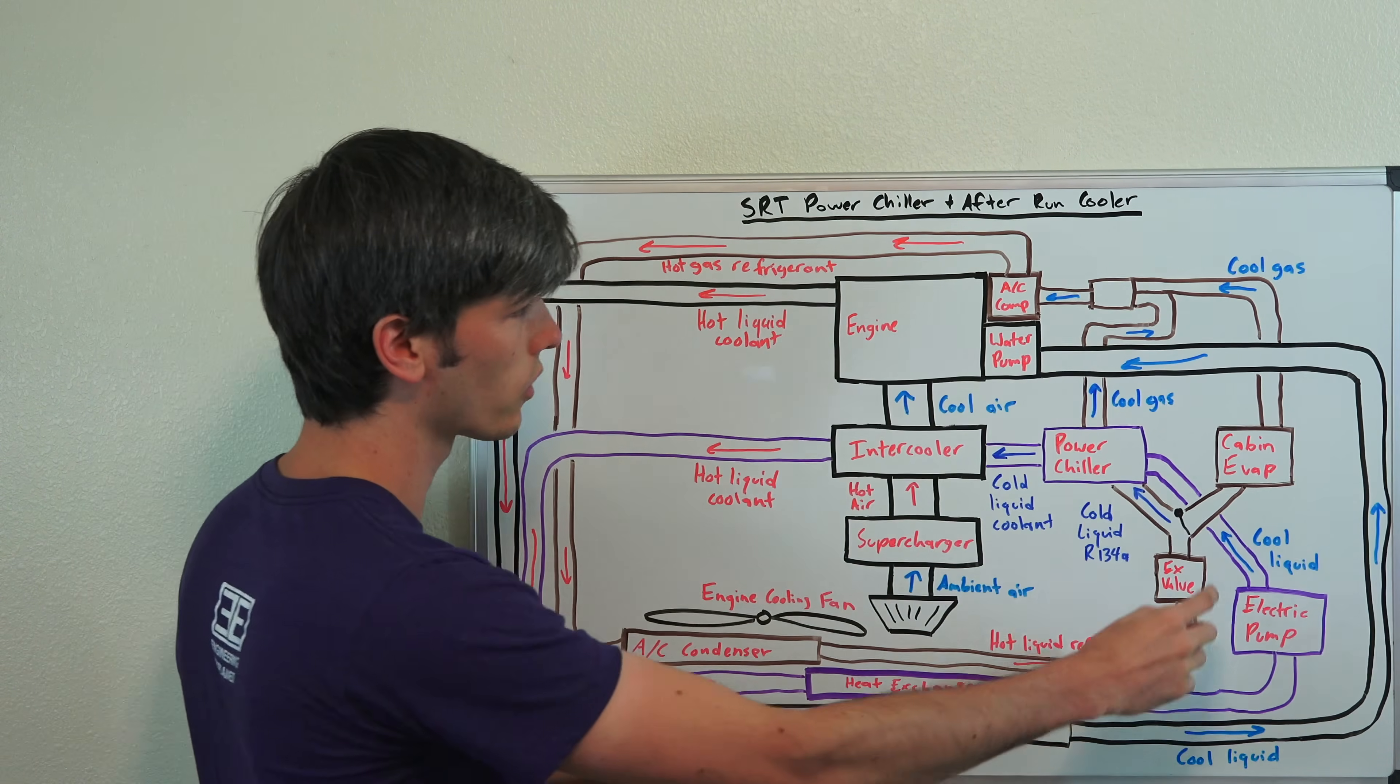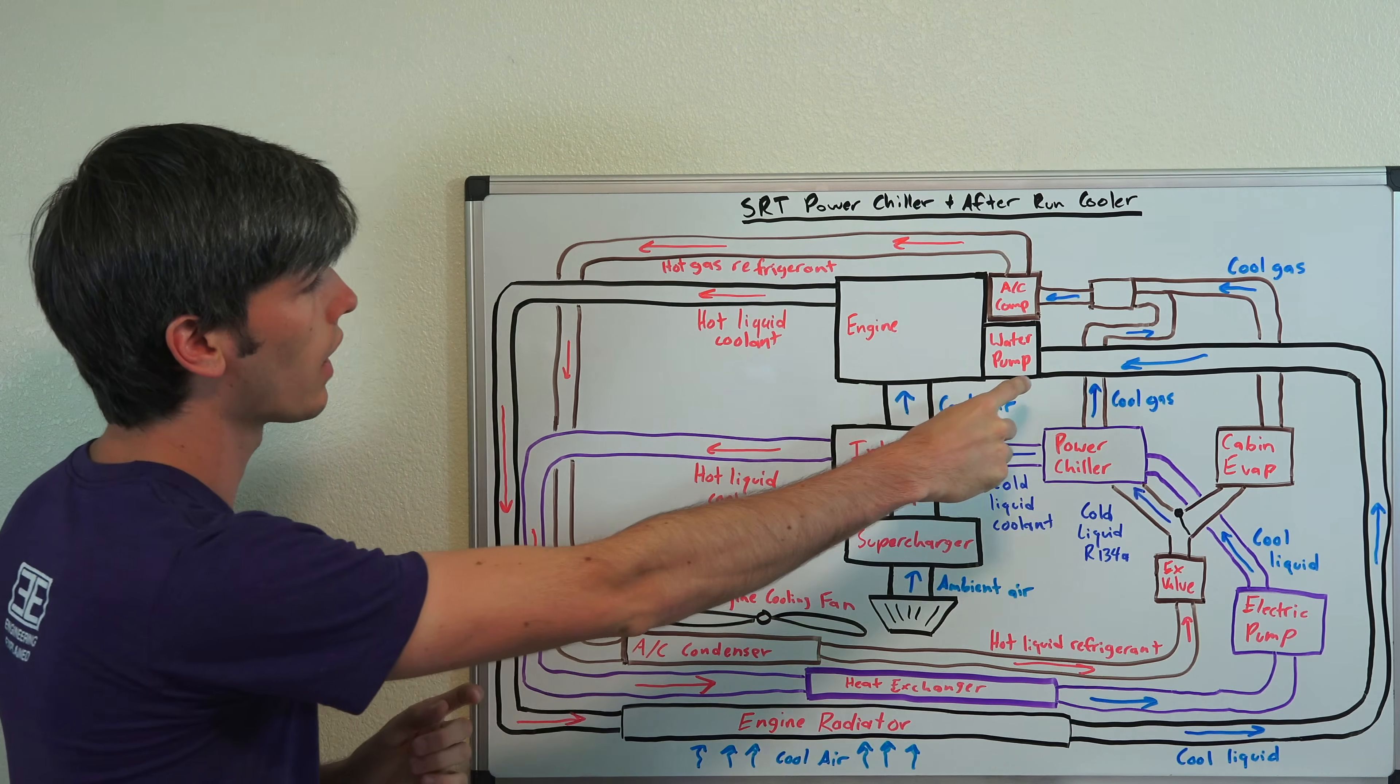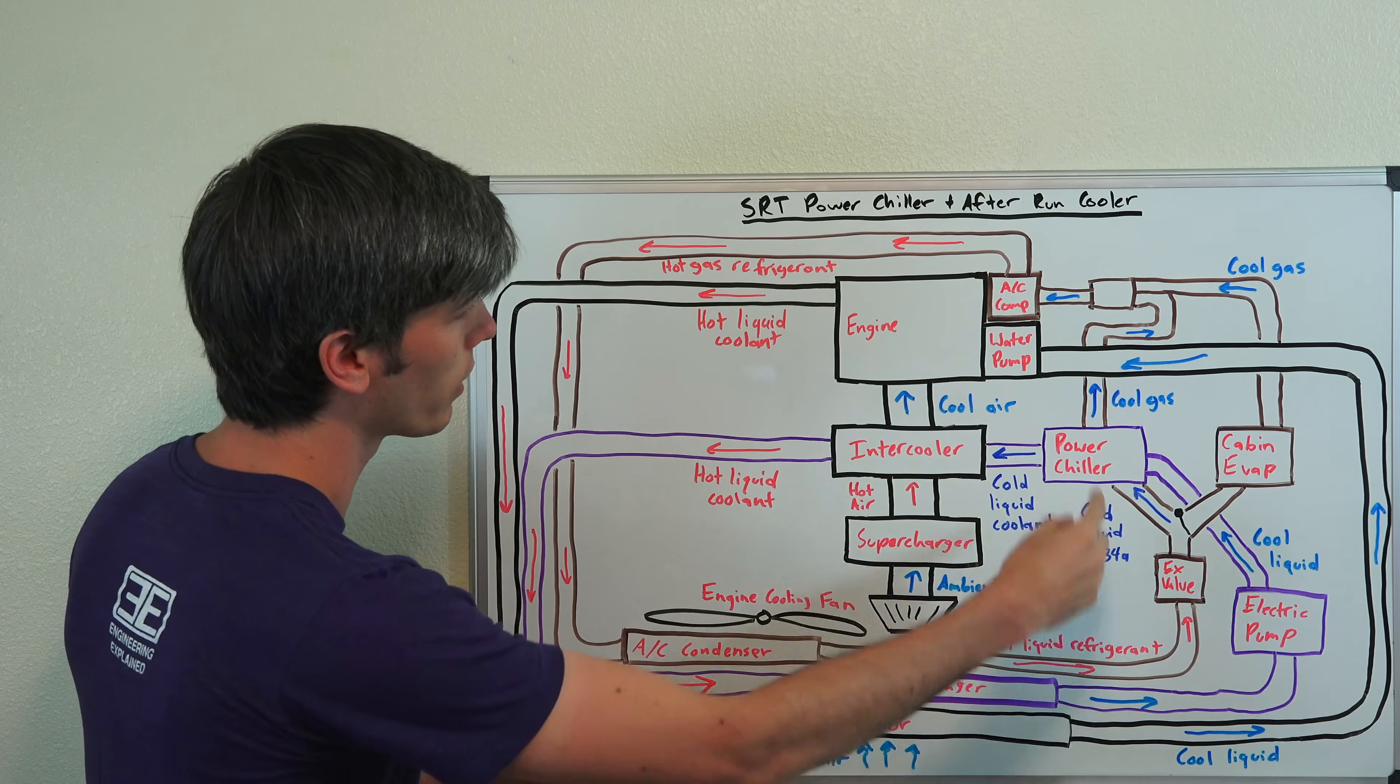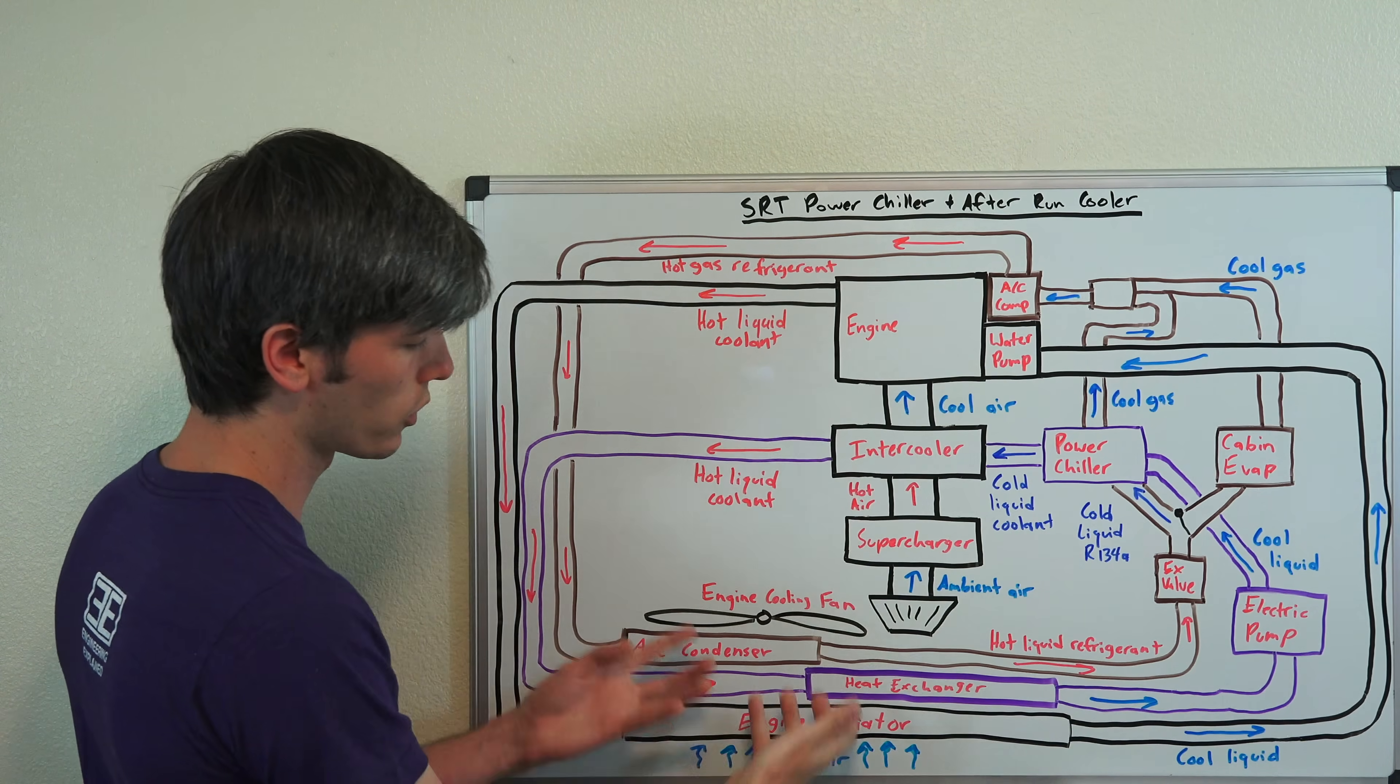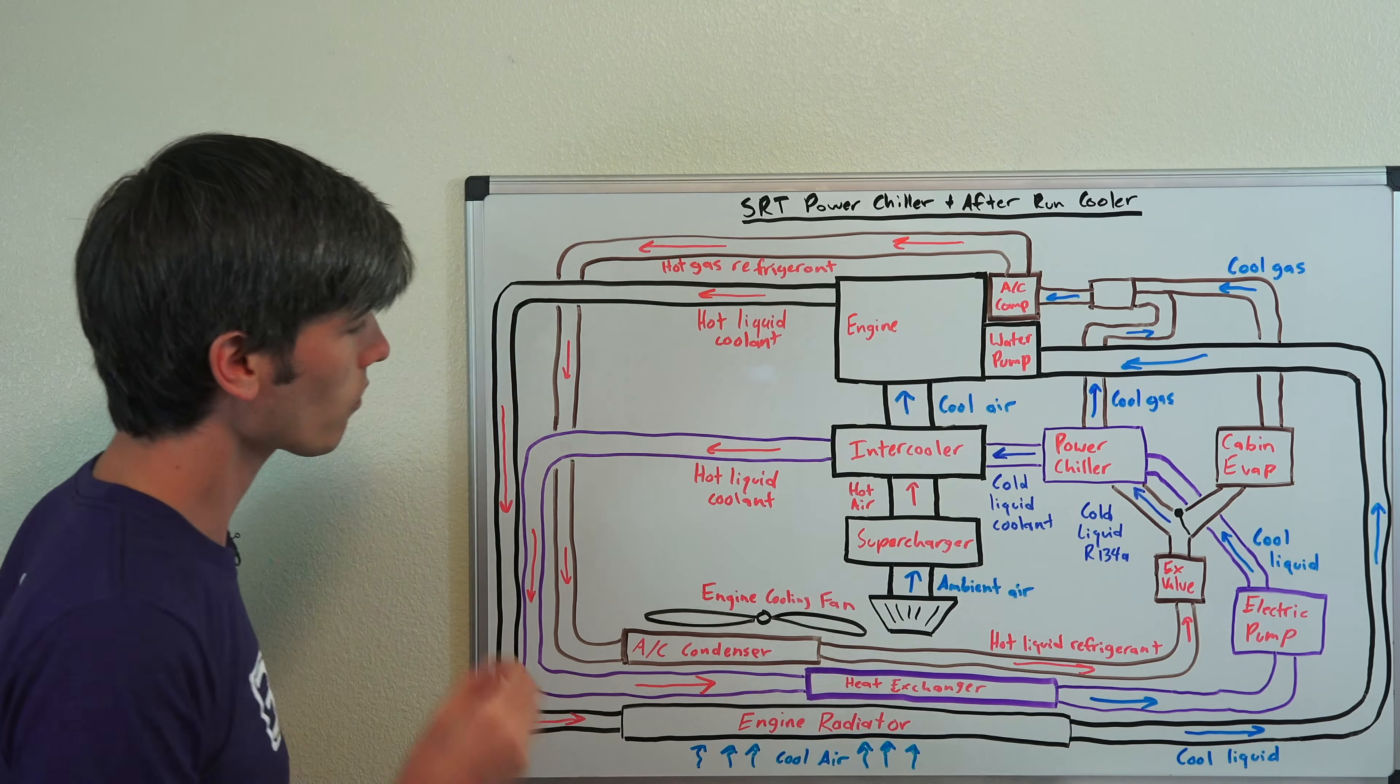Now, the engine gets its cooling using a radiator like all the other internal combustion engines out there. So, you've got a water pump, which will be pulling fluid from the engine radiator and then pumping that fluid through the circuit. So, you've got hot liquid coolant coming out and then the cooled liquid, which will be cooled by the ambient air of that radiator mounted at the front of the vehicle.